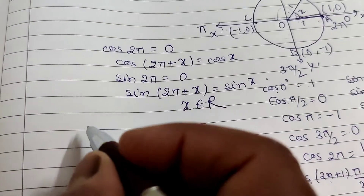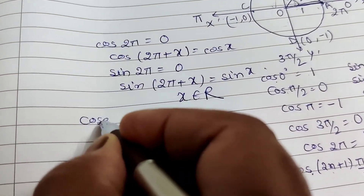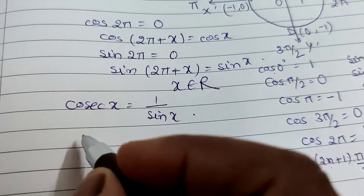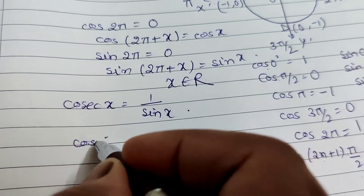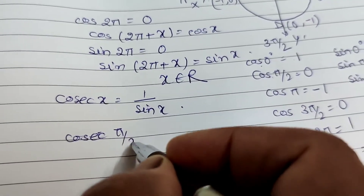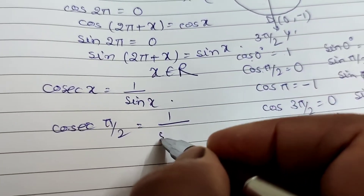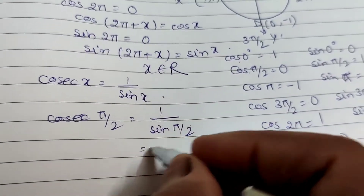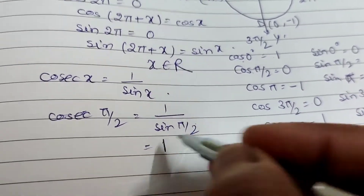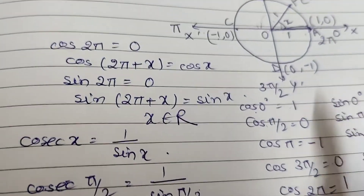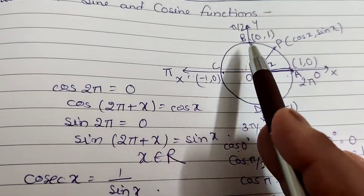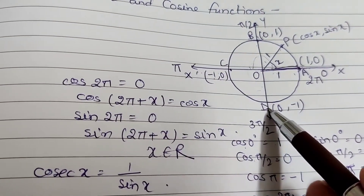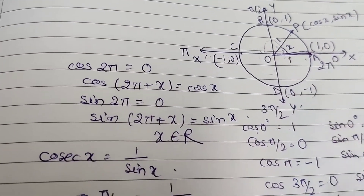We know that cosec x is the reciprocal of sin x, that is, 1/sin x. For example, cosec(π/2) = 1/sin(π/2) = 1/1 = 1. Similarly, we can find all the values for 0°, 90°, 180°, 270°, and 360°.